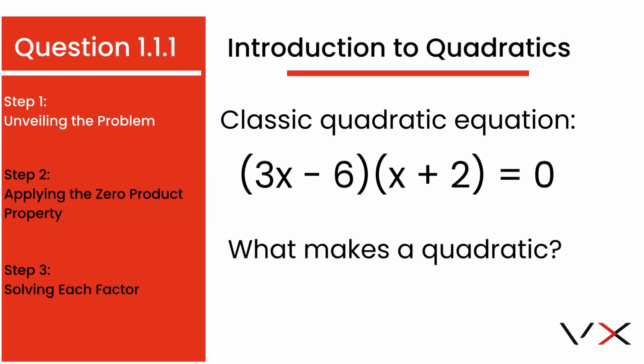In front of us is a classic quadratic equation. Open brackets, 3 times x minus 6, close brackets, times, open brackets, x plus 2, close brackets, equals 0.